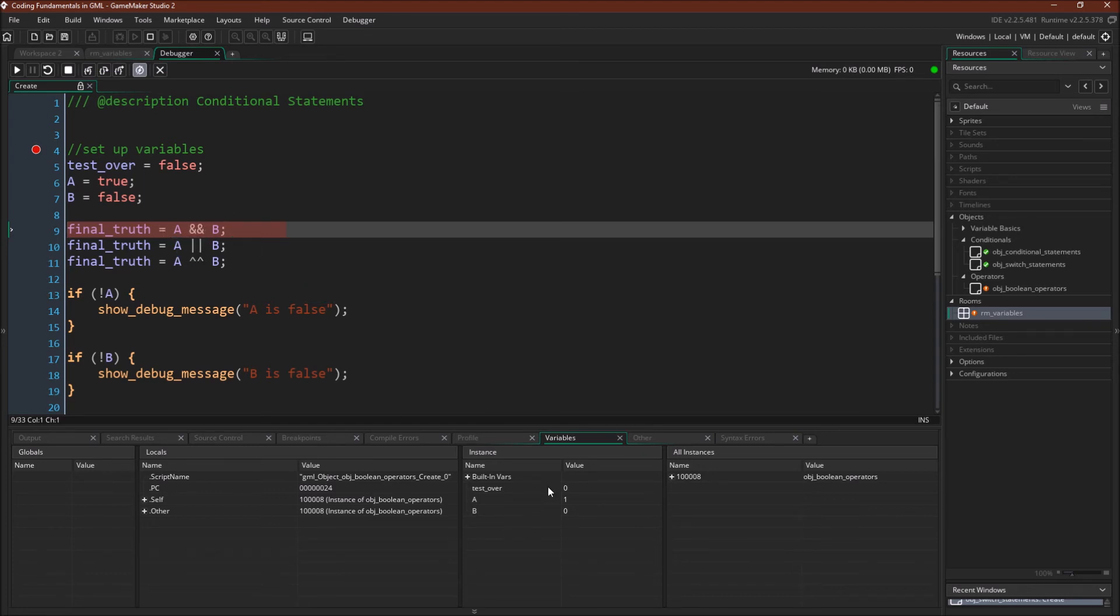Now we're going to do some of the evaluations. A and B. So A is true, B is false. This should equal false. Our final truth is false. A or B. Again, A is true, B is false. Since A is true, this should evaluate to true, which it does. And in XOR, only one of them is true. So it should stay true, which it does.